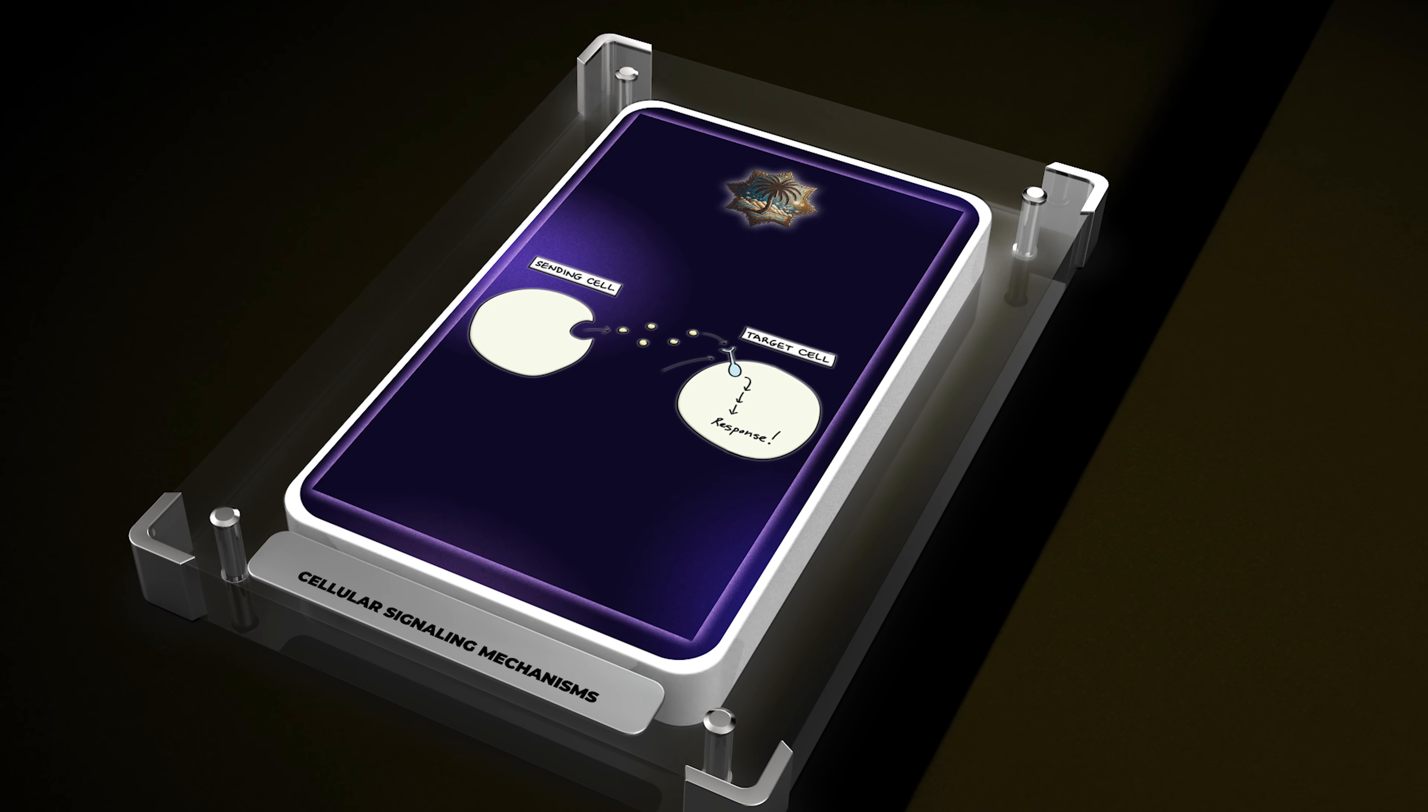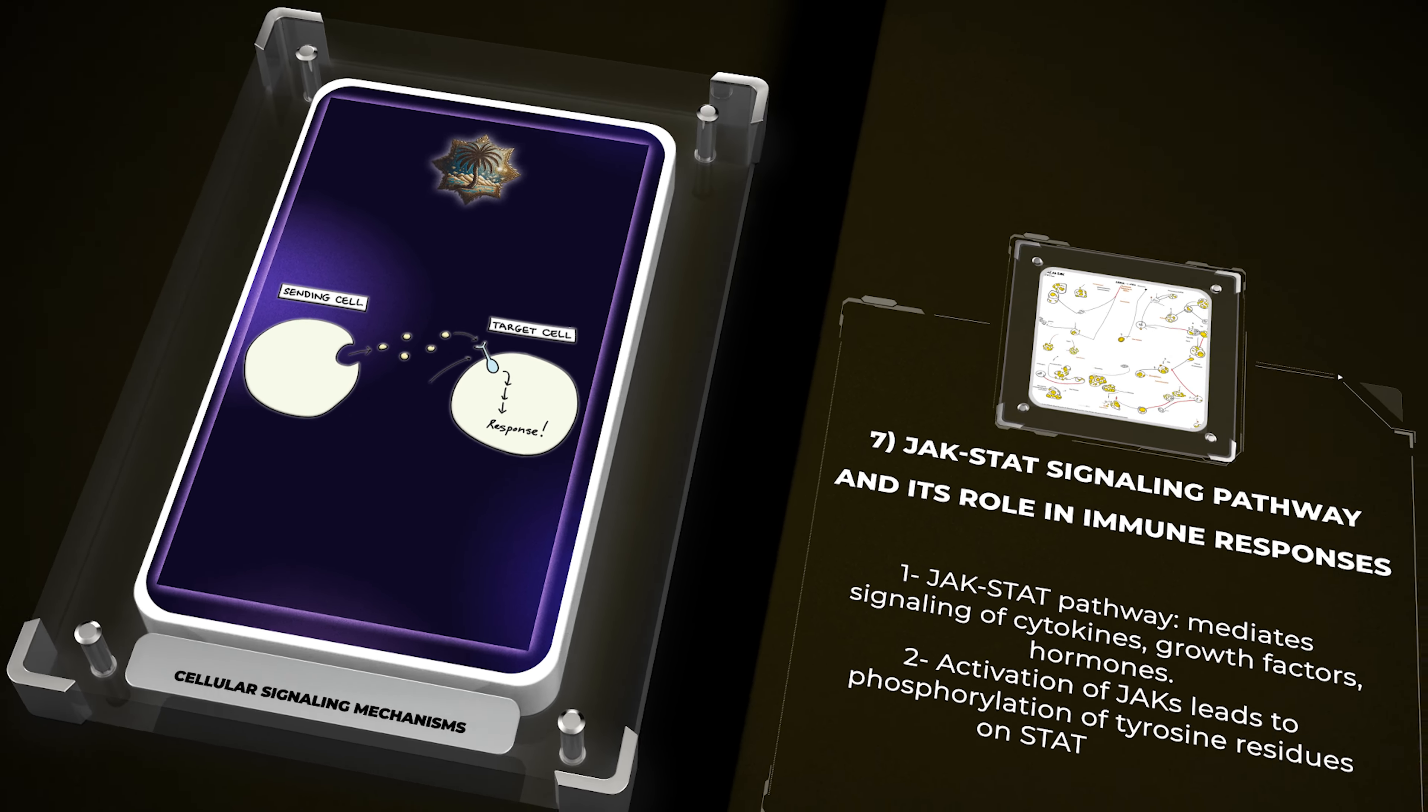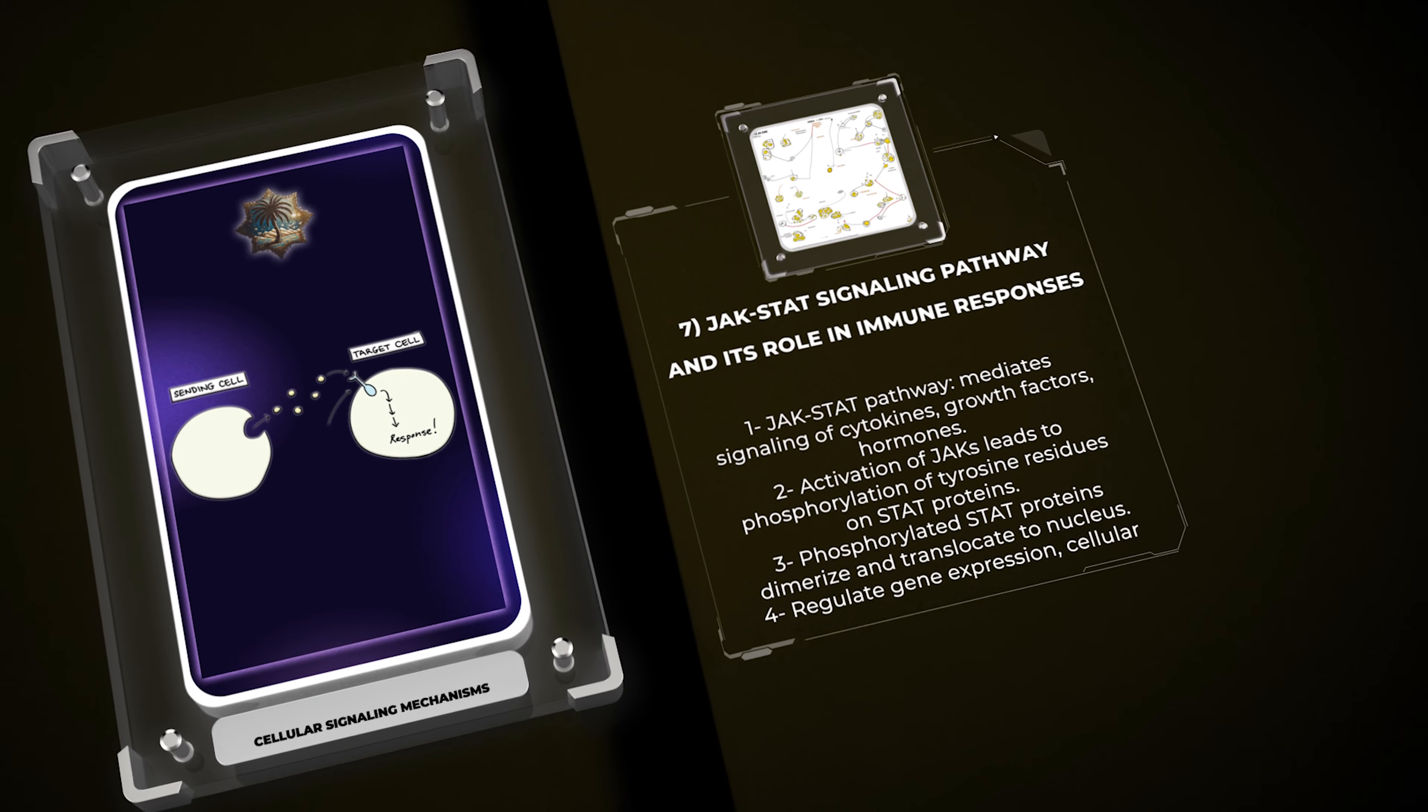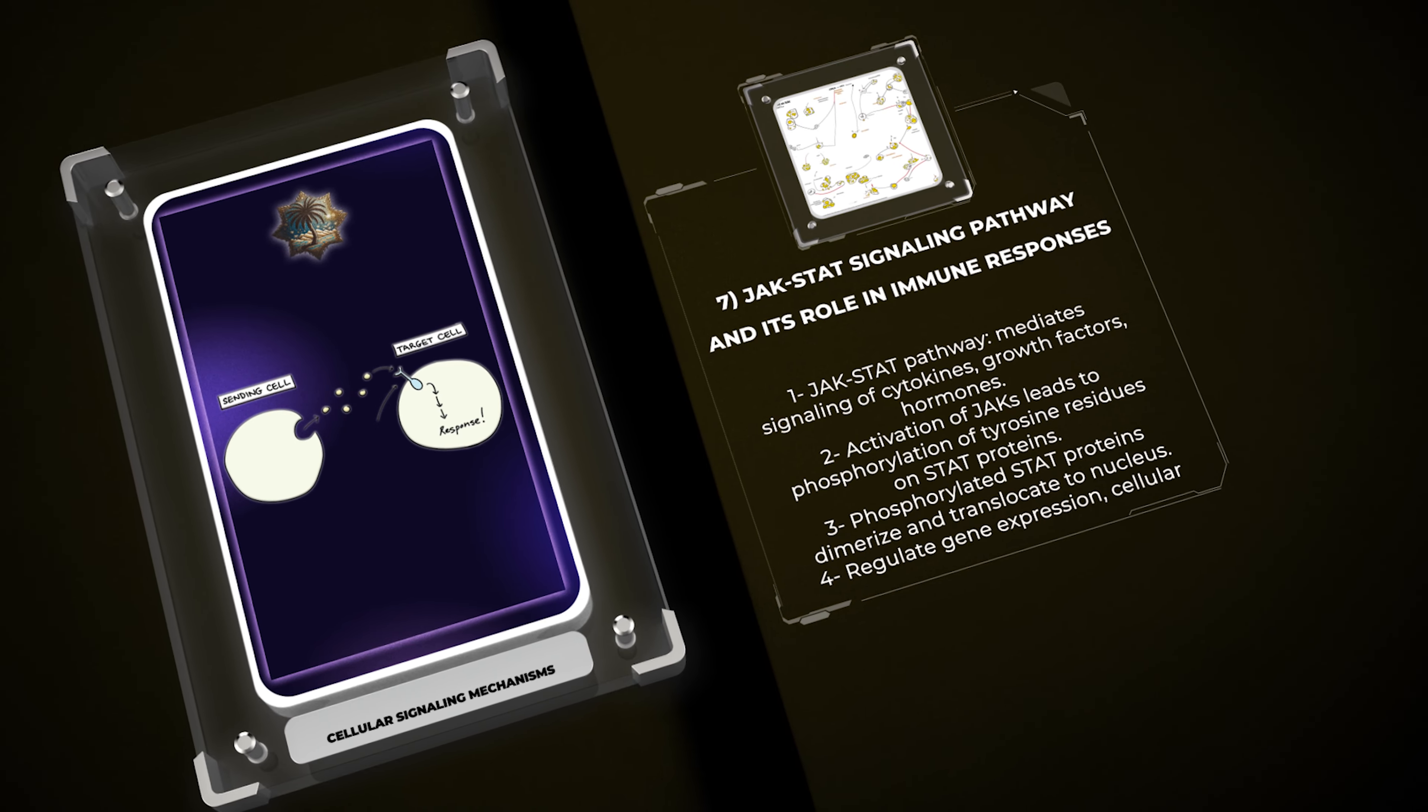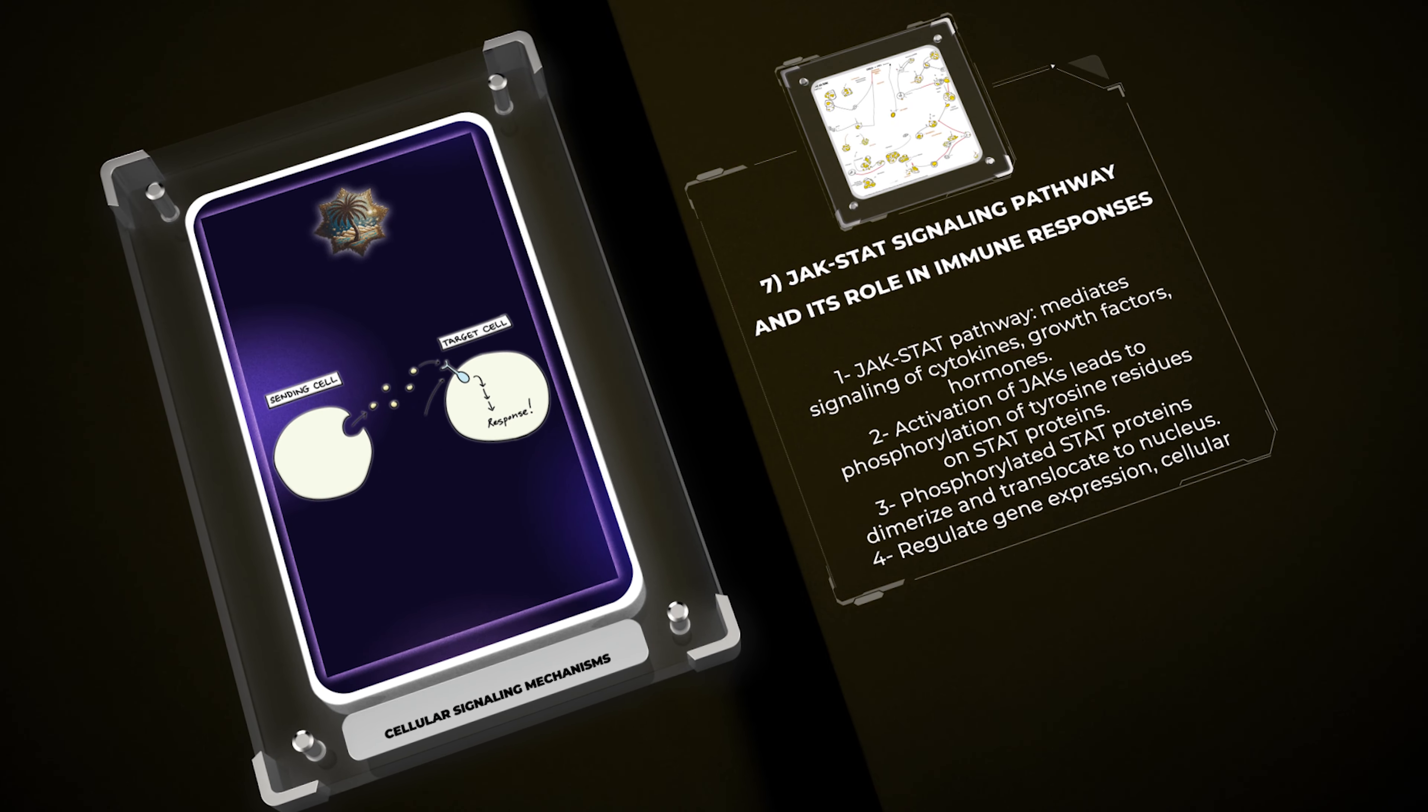The Janus kinase signal transducer and activator of transcription (JAK-STAT) pathway mediates the signaling of numerous cytokines, growth factors, and hormones. Activation of JAKs leads to phosphorylation of tyrosine residues on STAT proteins, resulting in their dimerization and translocation to the nucleus. There, they regulate gene expression, influencing diverse cellular processes, such as immune responses, hematopoiesis, and cell differentiation.